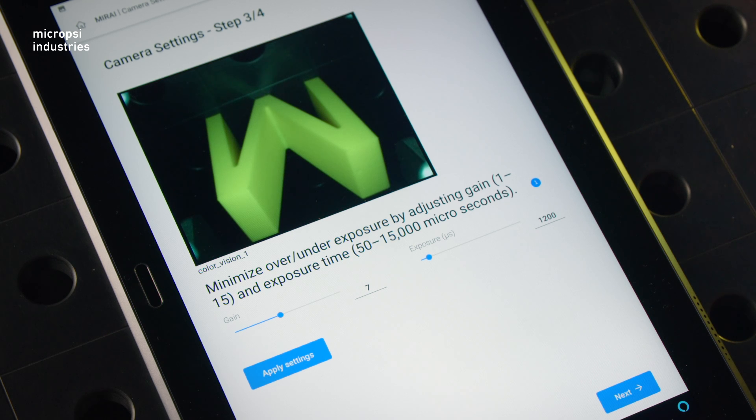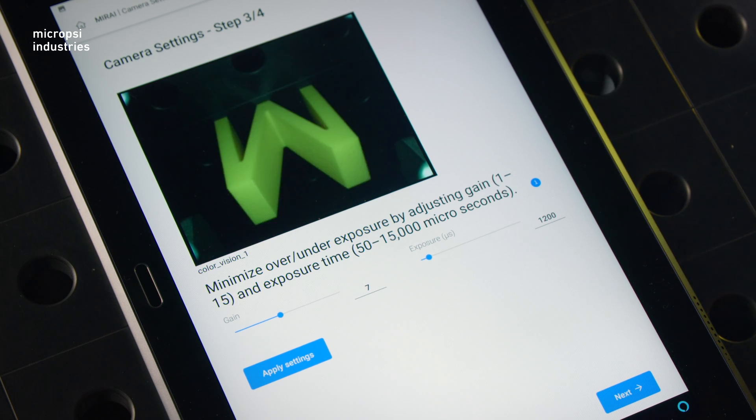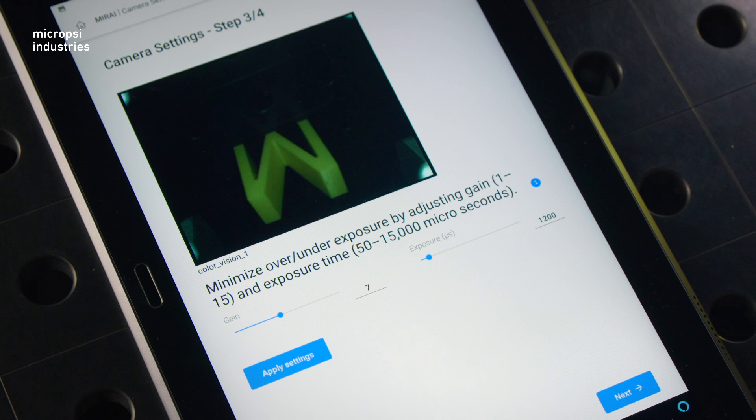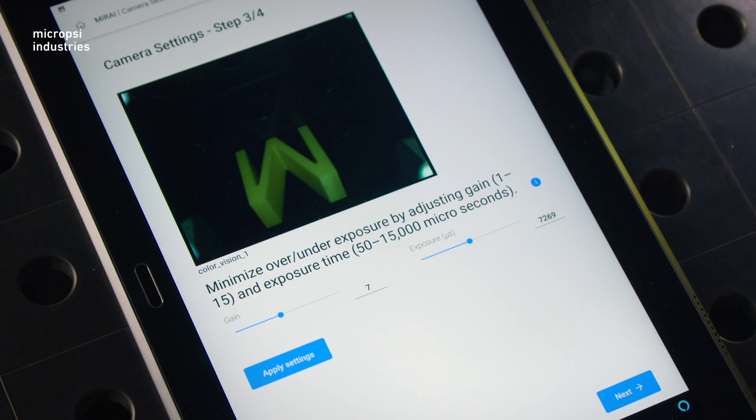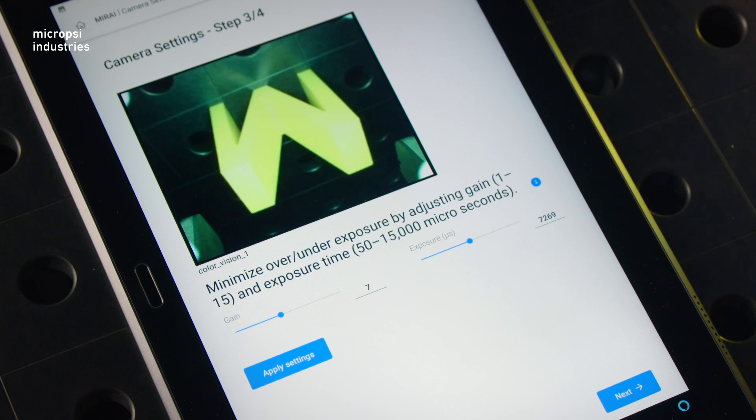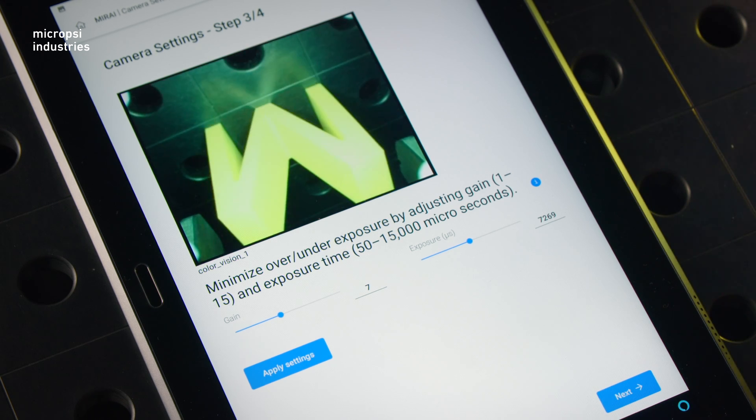First, adjust the vision settings when your robot is in target position. If you don't, you might optimize for the wrong conditions. For example, pretend we adjust the exposure time when the robot is a distance from the target. Watch how blown out the image becomes as the robot approaches.